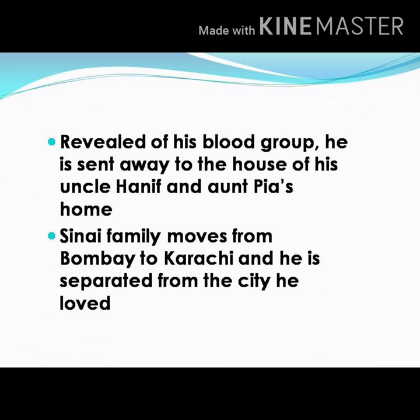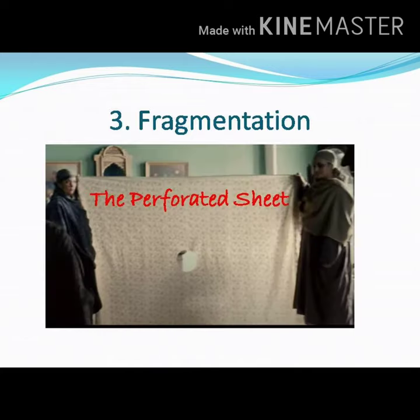In a third instance, the Sinai family moves from Bombay to Karachi and he is separated from the city he loved very much. The first chapter of the novel is titled The Perforated Sheet, and this novel talks about the fragmentation of individuals, cultures, and landscapes as well as nations.